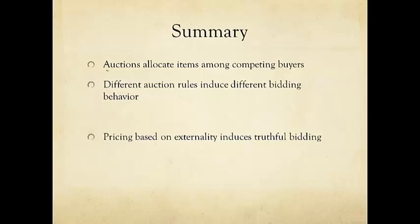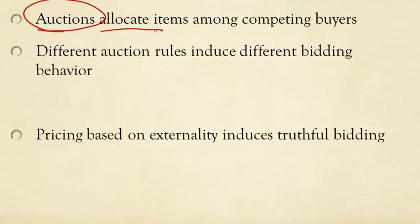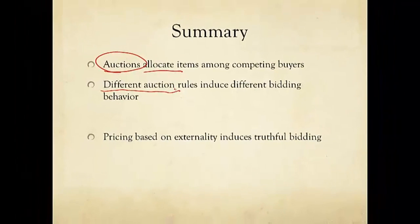In summary, we've seen auction as a game. We've seen auction as an allocation mechanism to decide how to allocate items among competing users with possibly a fuzzy notion of the value of that item. We also have seen a very important theme in this course, that different mechanisms, in this case auction rules, will induce different bidding behavior.